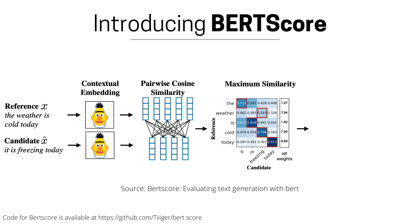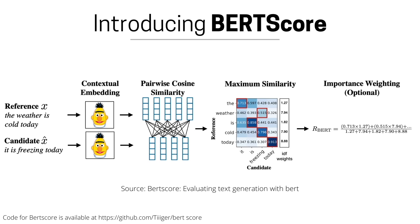The authors also introduced the notion of weights for each word's similarity calculation, specifically IDF weights derived from large amounts of offline text data. The intuition is that if a word has a very high IDF weight, it is not a common word across multiple documents, making it more meaningful to compare during the similarity calculation.